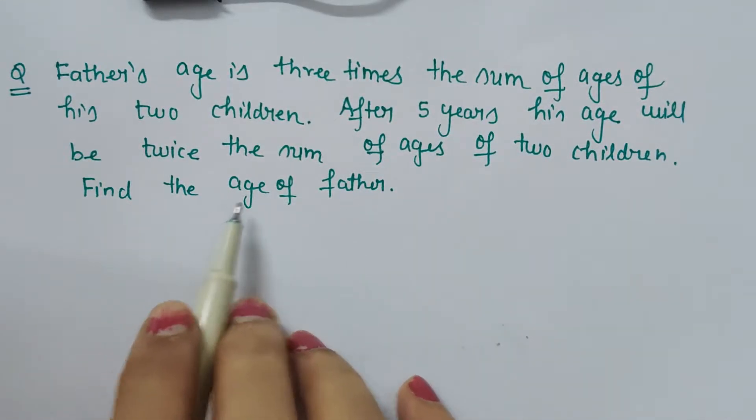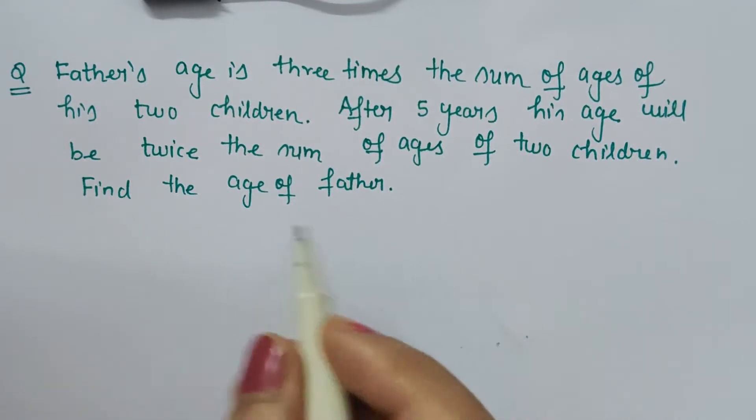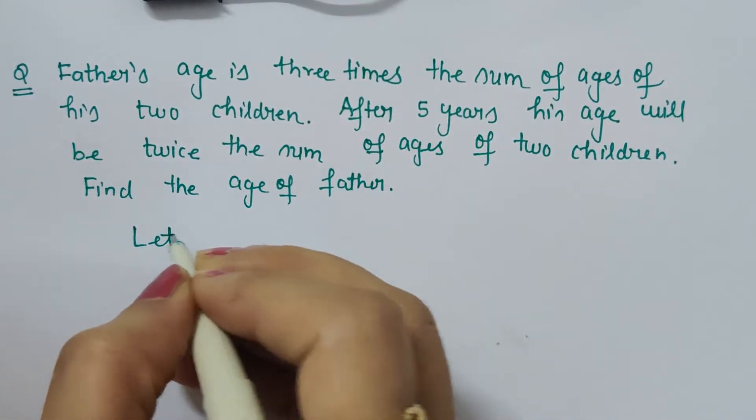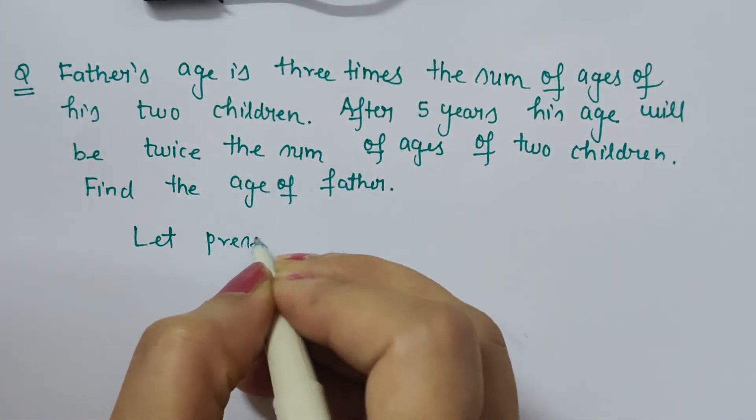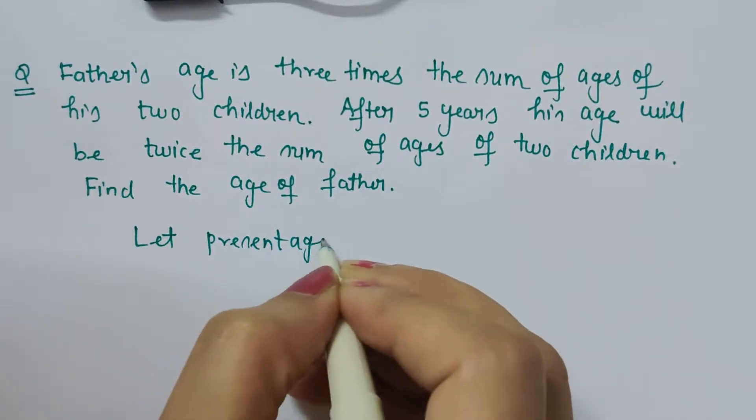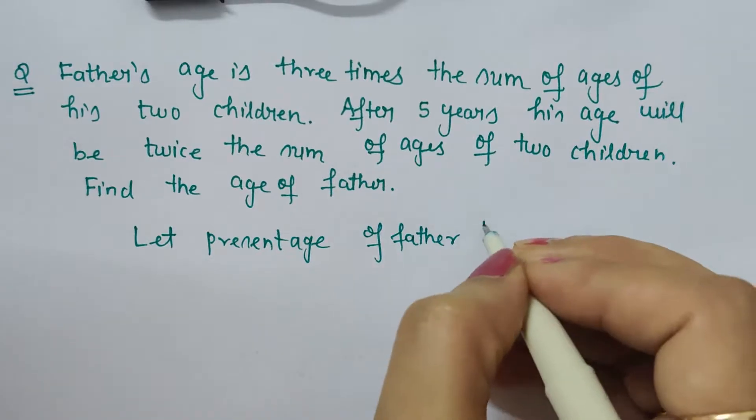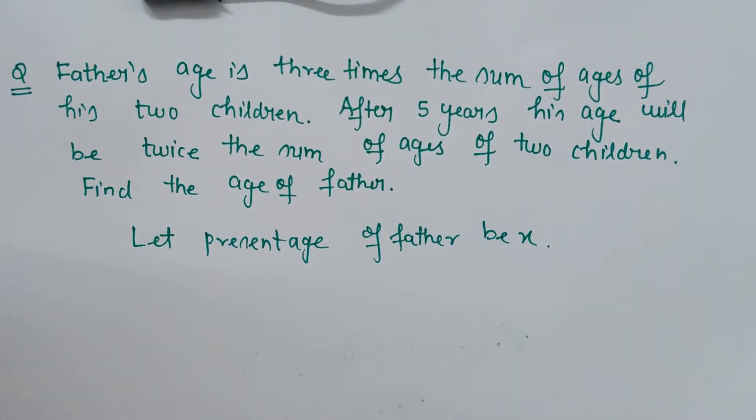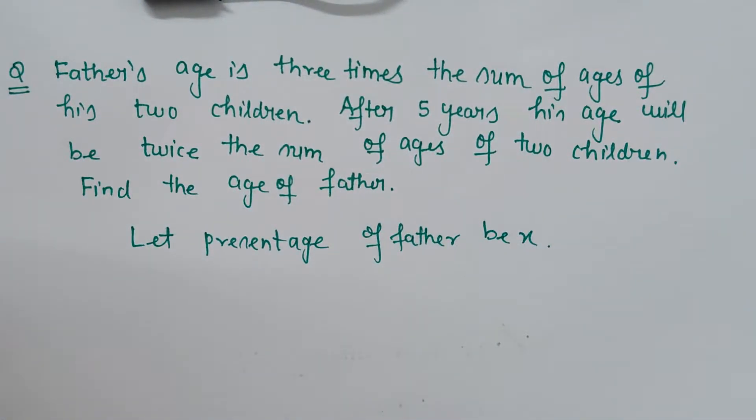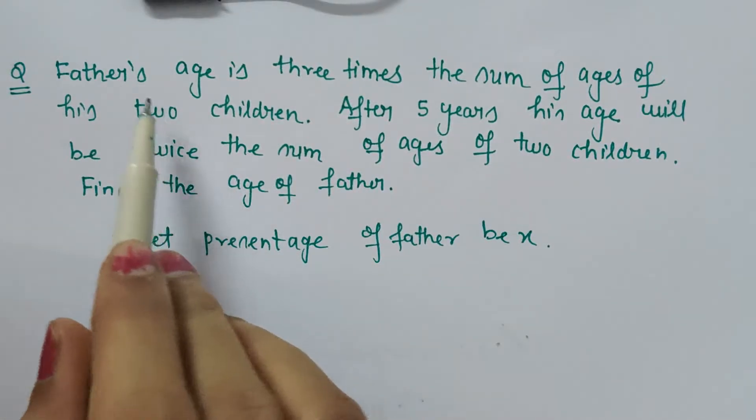Obviously, what is to be calculated is to be assumed as x. So let present age of father be x. This we have assumed.